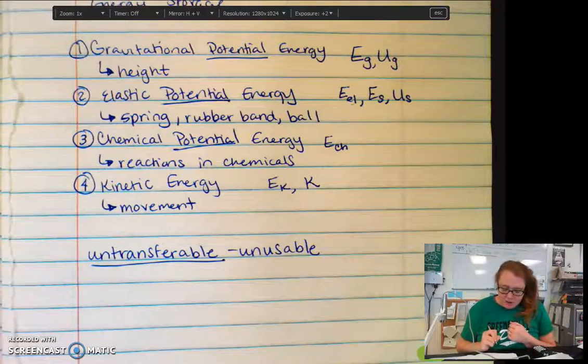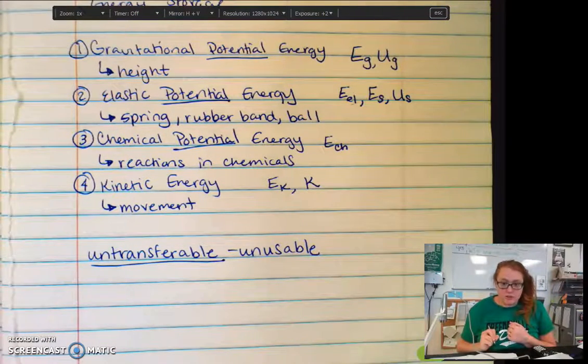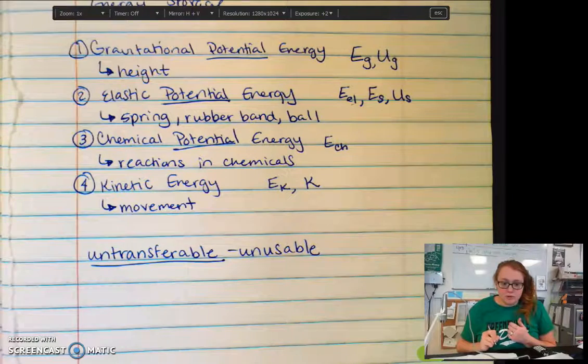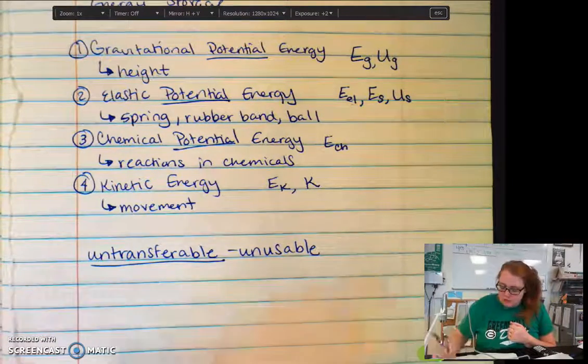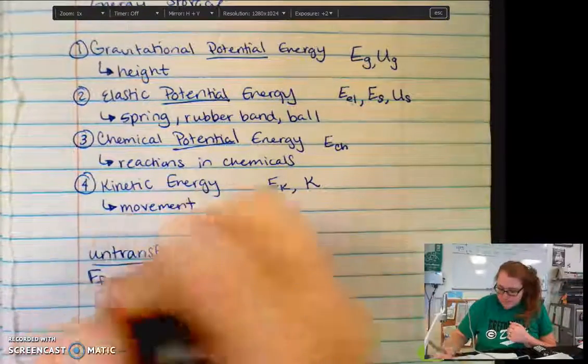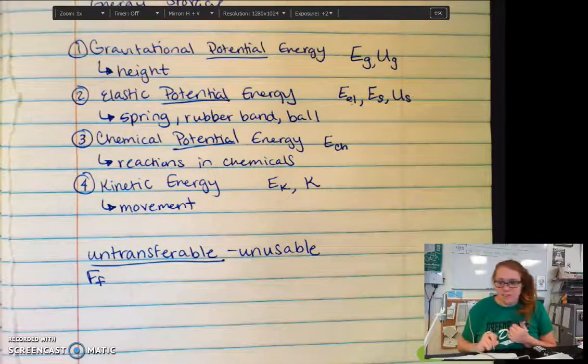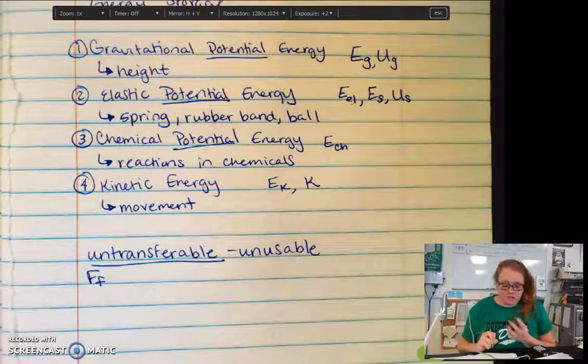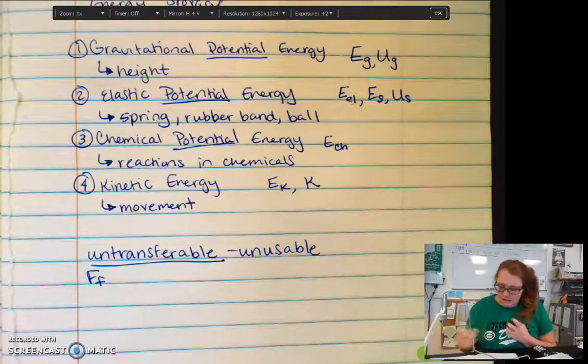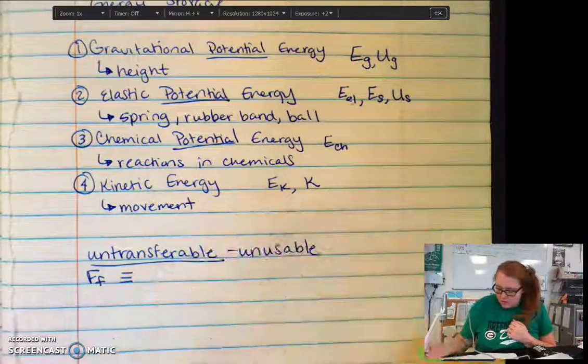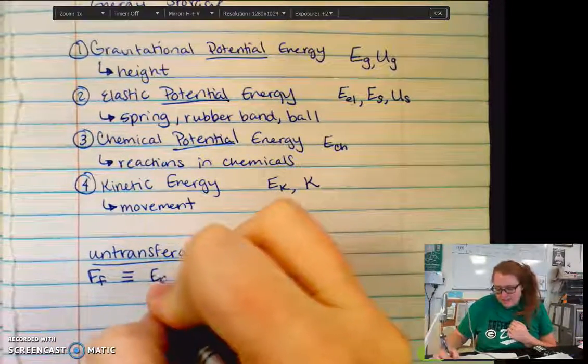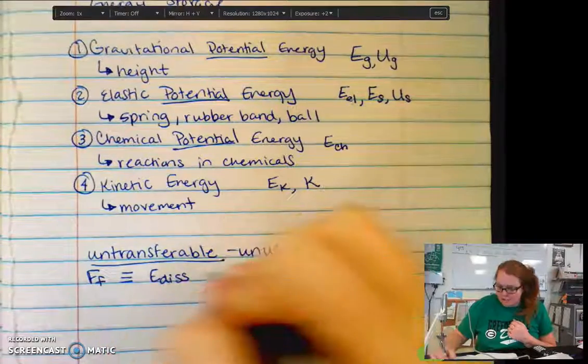That being said, one force that's going to produce a lot of unusable energy is the force of friction. The force of friction tends to slow things down and cause things to heat up. So we call that, along with any other unusable energy, energy that has just been dissipated.